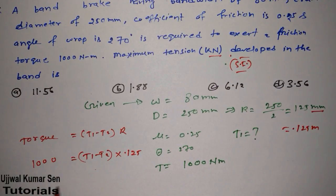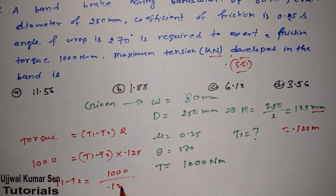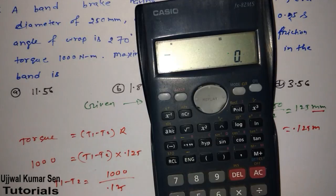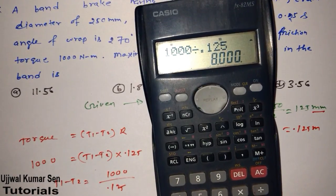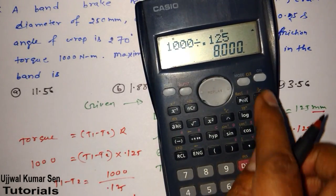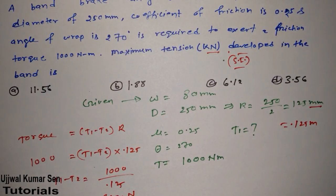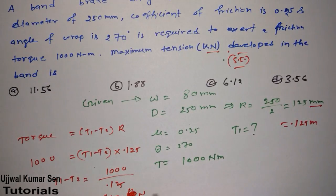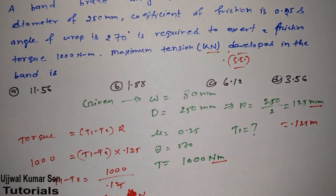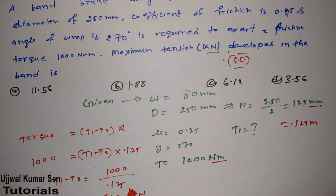Now multiple this with 125. Torque is what we got here. Torque is 1000. So T1 minus T2 is equal to 1000 by 125. So now we have to use calculator. How much we got? 8,000 N we got here. So we got T1 minus T2 is equal to 8000 newton.